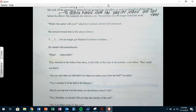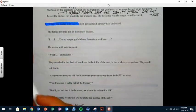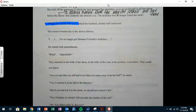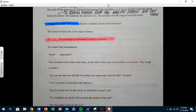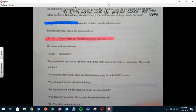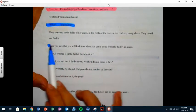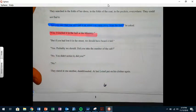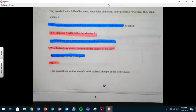But suddenly she uttered a cry. The necklace was no longer around her neck. And what does the husband say? 'What's the matter with you?' asked her husband, already half undressed. And she turned towards him in the utmost distress. 'I no longer got Madame Forestier's necklace.' And he started with astonishment. 'What? Impossible!' They searched for it in the folds of the dress, in the folds of the coat, in the pockets, everywhere. They could not find it. 'Are you sure that you still had it on when you came away from the ball?' 'Yes, I felt it in the hall at the ministry.' 'But if you had lost it in the street we should have heard it fall.' 'Yes, probably we should.' 'Did you take the number of the cab?' 'No, you didn't notice it did you?' 'No.' They stared at one another dumbfounded. At last...